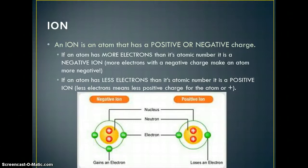If an atom has fewer electrons than its atomic number, it's a positive ion. Getting rid of electrons means getting rid of negative charges, so the atom becomes more positive. An ion is an atom with a positive or negative charge, and we'll be going over this more in class.